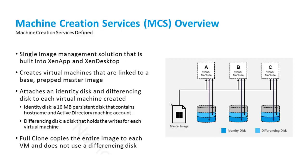MCS creates virtual machines that are linked to a base, prepared master image. MCS-based machines will have two disks. The first is an identity disk — a 16 MB persistent disk that contains the hostname and the Active Directory machine account. The second is a differencing disk, which holds the writes for each virtual machine, storing temporary data that is cleared once the machine is rebooted.